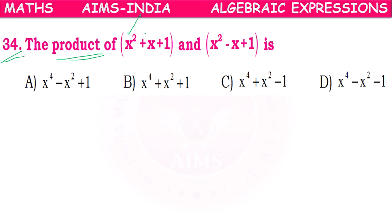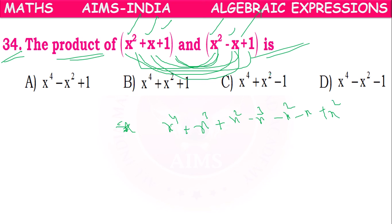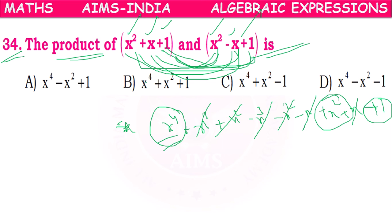Next: the product of (x² + x + 1) and (x² - x + 1). Multiplying term by term: x⁴ + x³ + x² - x³ - x² - x + x² + x + 1. After cancellations, x³ - x³ cancel, x² - x² + x² = x², -x + x cancel. What remains is x⁴ + x² + 1. Option B is correct.